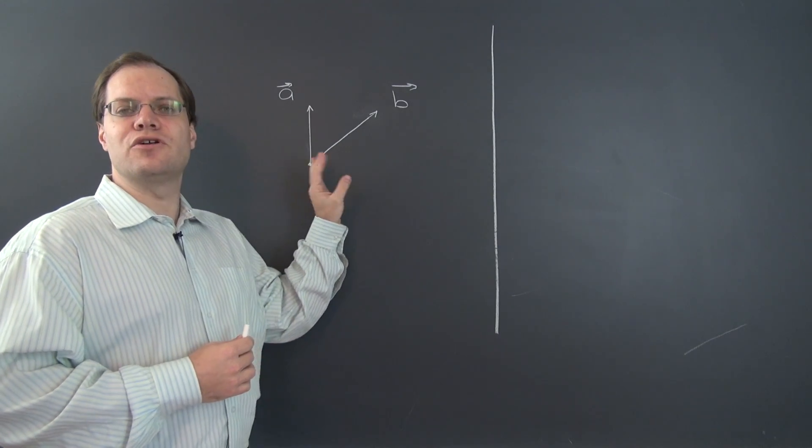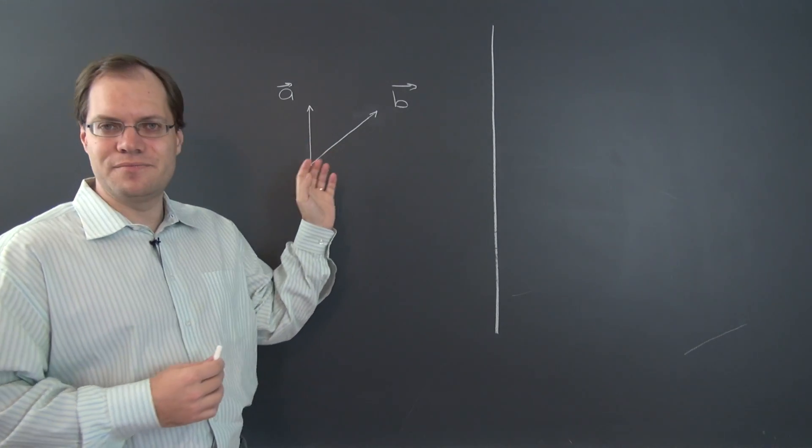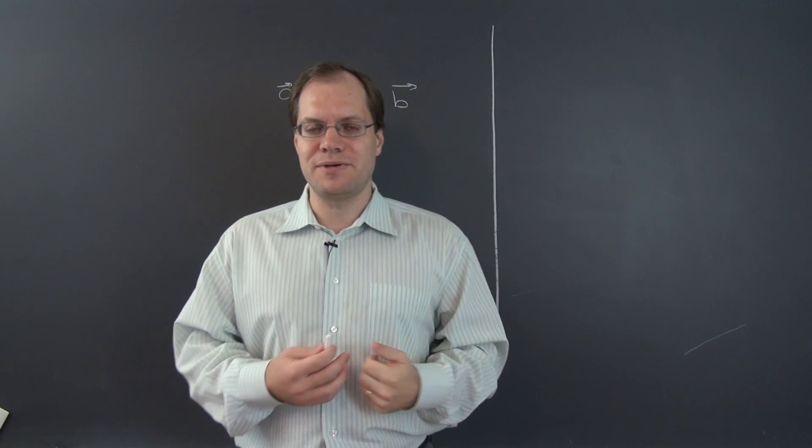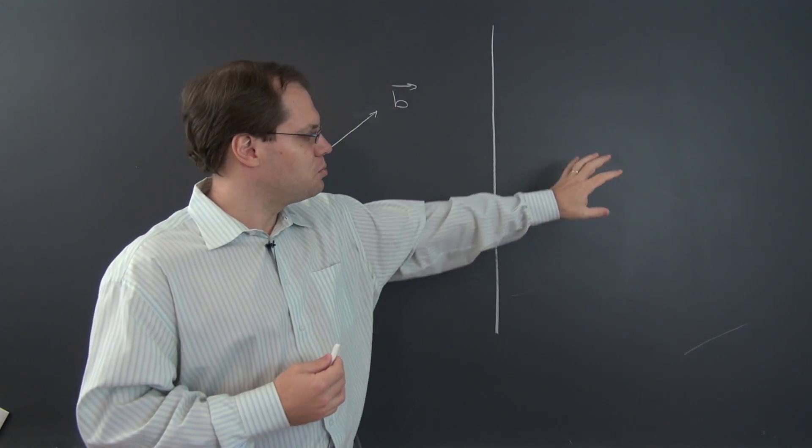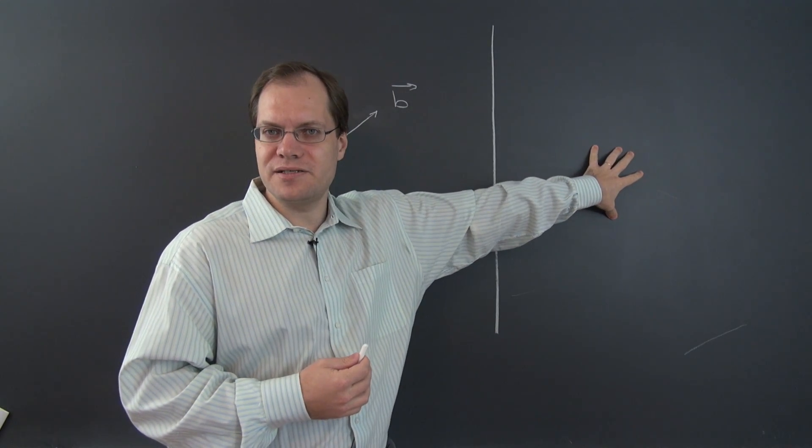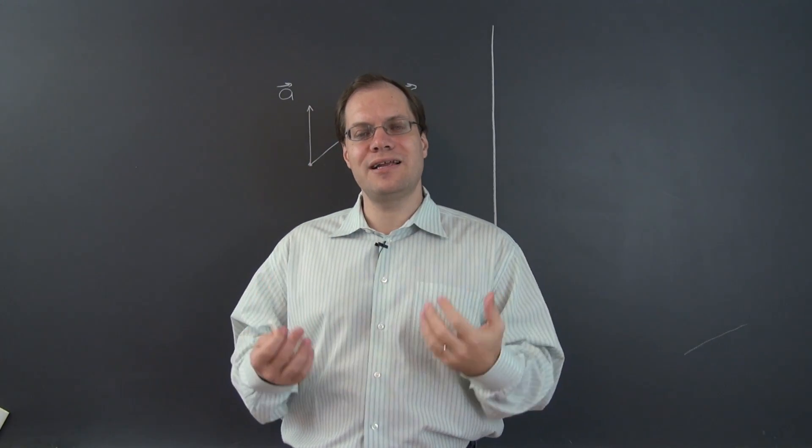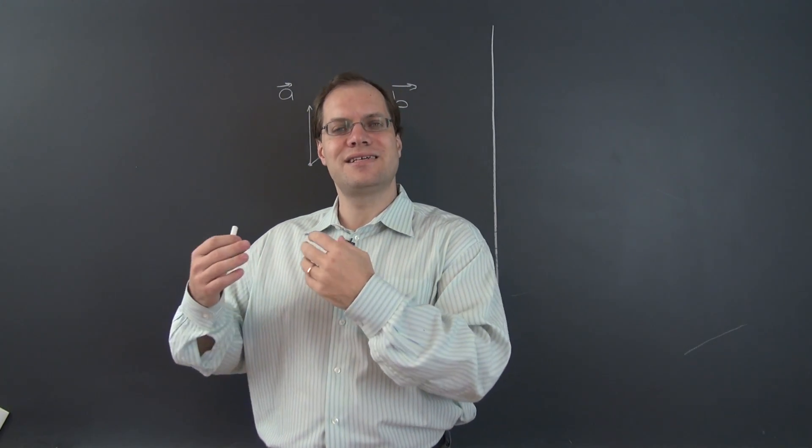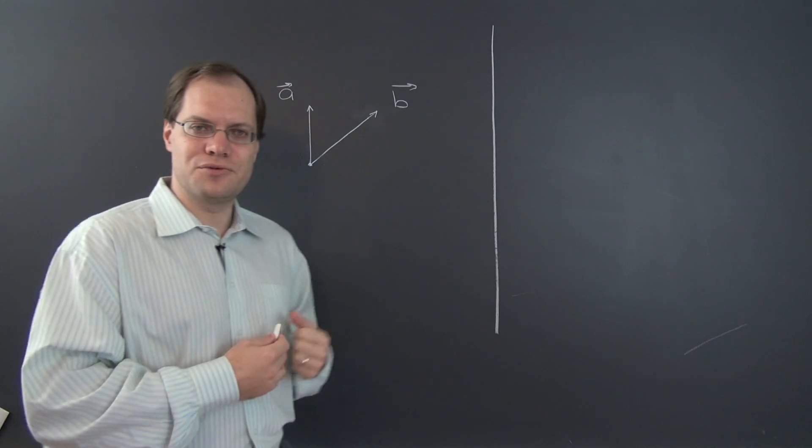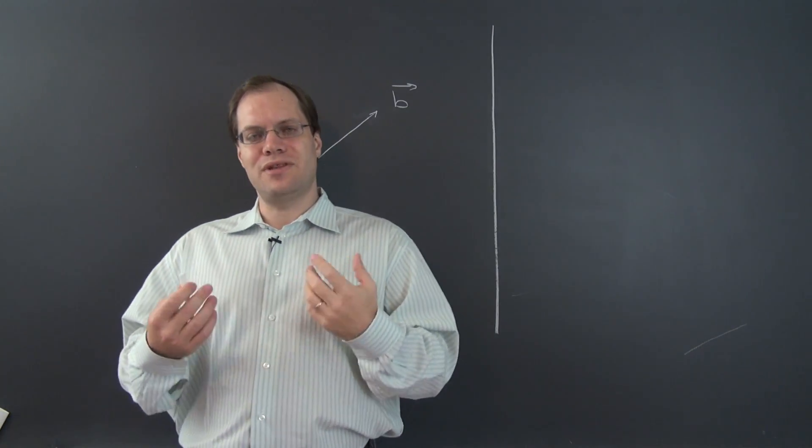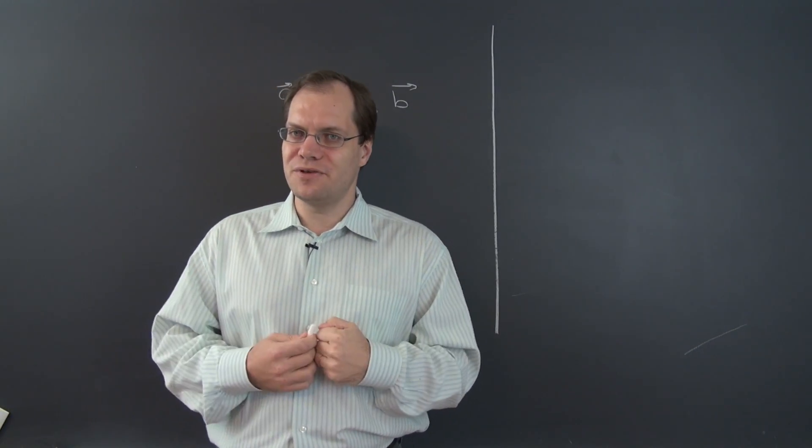We'll choose a basis, convert all the vectors A and B to their components with respect to that basis. And then we'll perform the addition in component space. And then we'll see whether we've got an answer that's consistent with our original answer that we obtained without components.